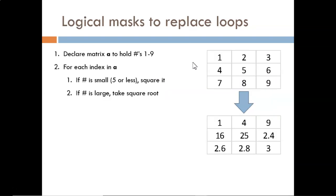Our next example is to try to write efficient code to accomplish this new goal. First, matrix A will be created to look like the table shown here. Then, for all the smaller numbers, five or less, we will square the numbers. And for all the larger numbers, we will take the square root. This will produce this final table.